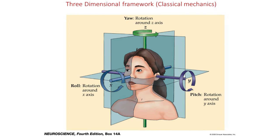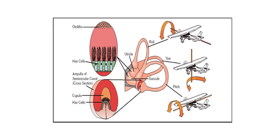The three semicircular canals work in three planes: the yaw plane, the roll plane, and the pitch plane. A good way to remember this is to think of aircraft maneuvers: the lateral canal is in the yaw plane, the anterior canal in the roll plane, and the posterior canal in the pitch plane. The pitch plane corresponds to a flight taking off or landing.